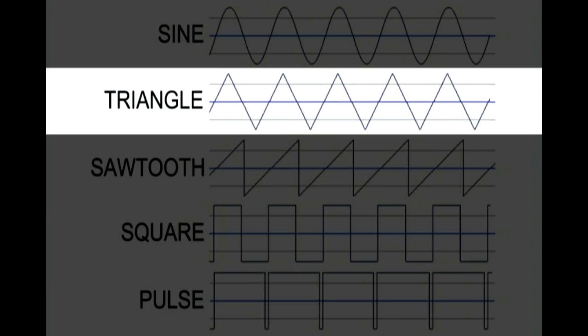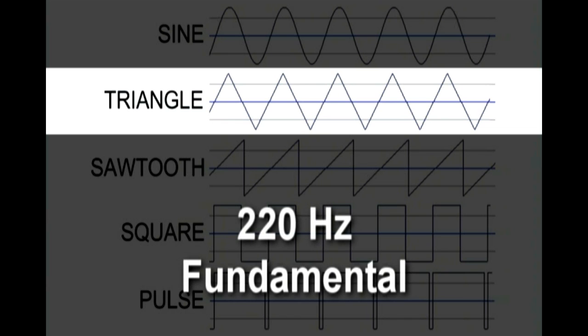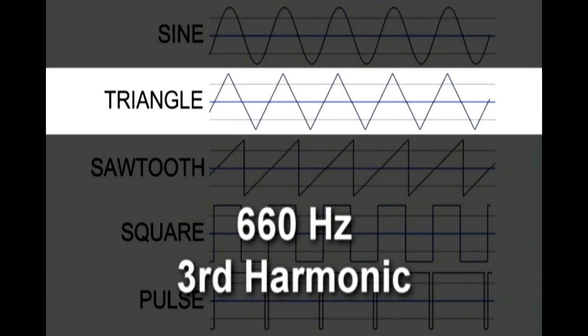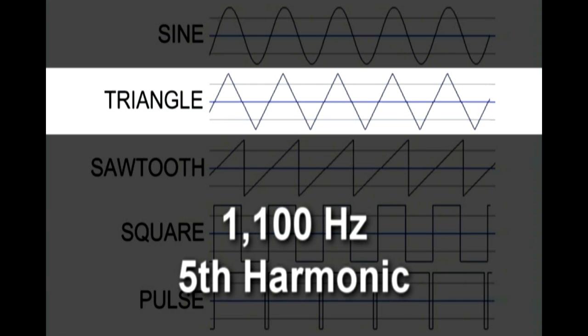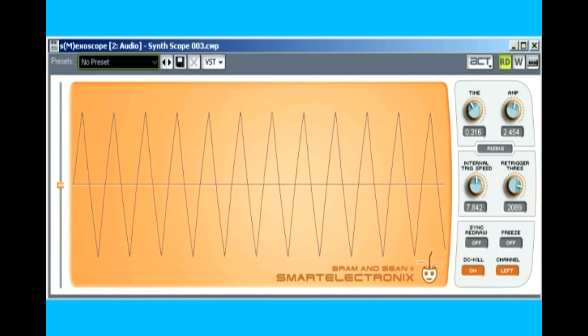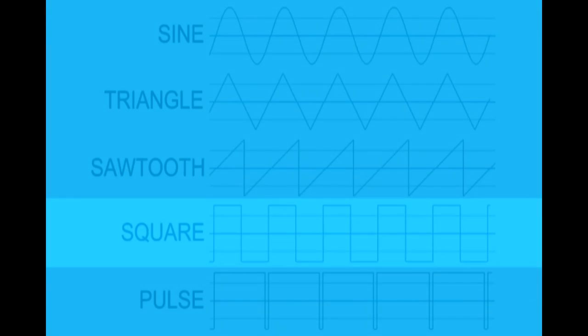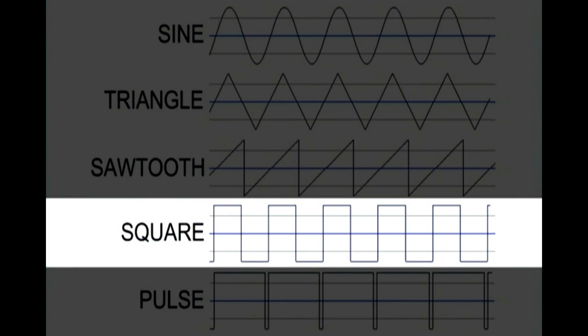A triangle wave has only odd harmonics, so an A220 note contains the 220 Hz fundamental, the third harmonic at 660 Hz, 1100 Hz as the fifth harmonic, the seventh harmonic at 1540 Hz, and so forth. A square wave also has only odd harmonics, but the harmonics are more prominent than in a triangle wave, so the sound is brighter.